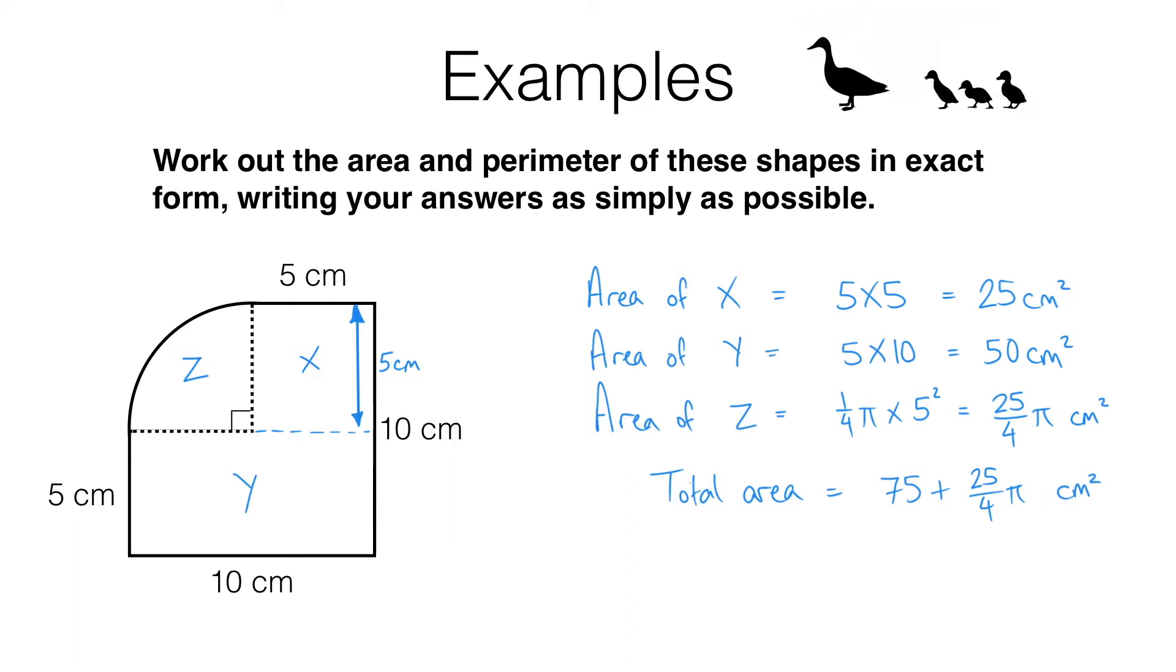Now we need to work out the perimeter of the shape. So the perimeter, the distance around the outside of this shape, is going to be what we get when we add up all of these straight line distances, the 5 centimeters, the 10, this 10 and the 5, and this curved distance here.